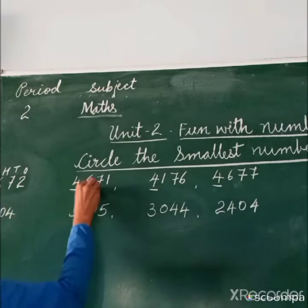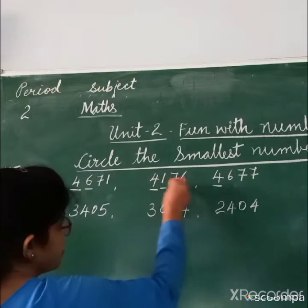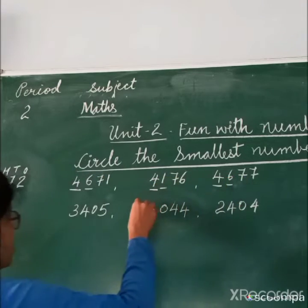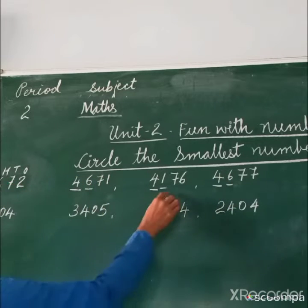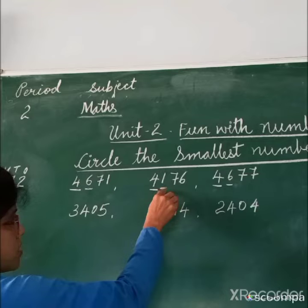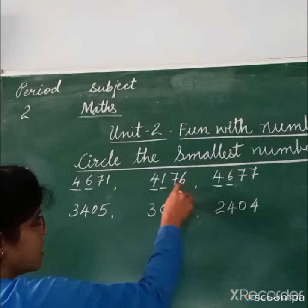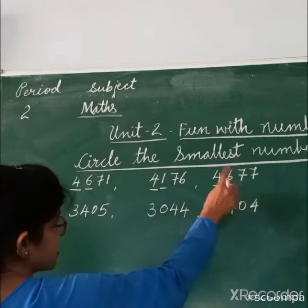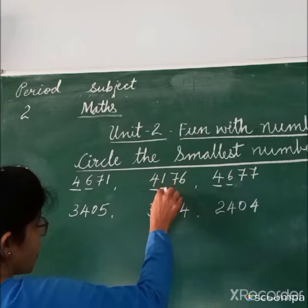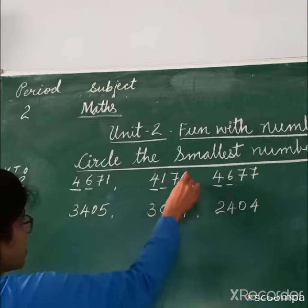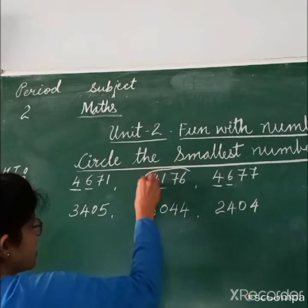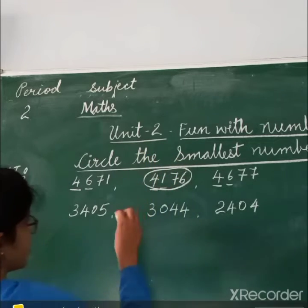Here 6, then here 6, here 1, here 6. Now you can make out there is a difference. Three places there is a 6 and one place there is only 1. So which is a big number, 1 or 6? 6 is a big number. Then which is a small number? 1. So this makes 4176 the smallest number. Here we have to circle this number.